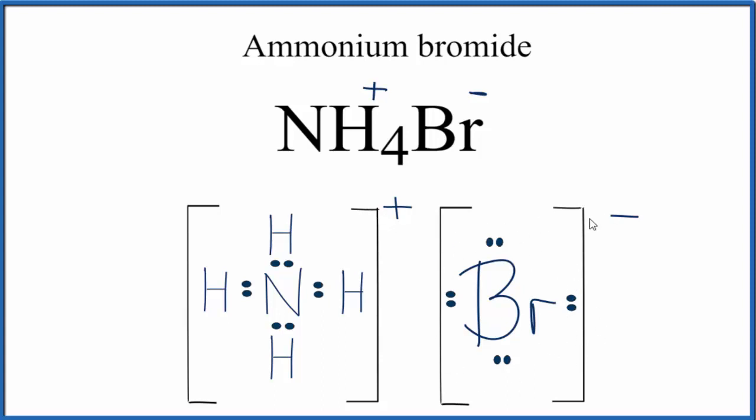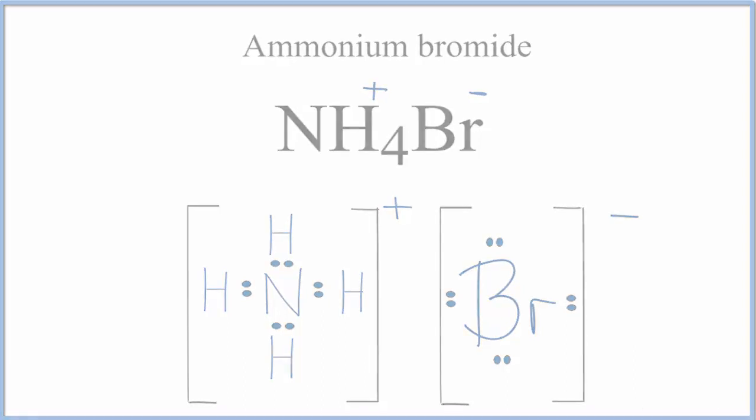And the plus and minus, they're attracted because they're opposites, and that forms the ionic bond here. This is Dr. B with the Lewis structure for NH4Br, ammonium bromide. Thanks for watching.